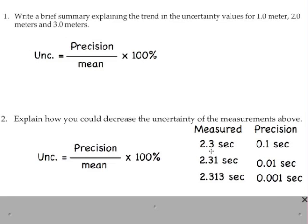So instead of being accurate to the tenth, what if you're accurate to the hundredth? 2.31. Then the precision would be 0.01. So instead of having 0.1 at the top, you'd have 0.01. And even more accurate, what if you had a stopwatch accurate to the thousandth of a second? Then you put 0.001 here. So how would you decrease the uncertainty of the measurements above? You would actually increase precision. But again, what that means is you decrease this value.